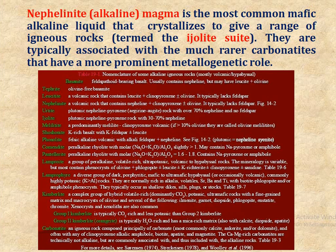Regarding the nomenclature of some alkaline igneous rocks — mostly of volcanic or hypabyssal form — Ijolyte is a volcanic rock that contains nepheline plus clinopyroxene, and may or may not contain olivine. It typically lacks feldspar.